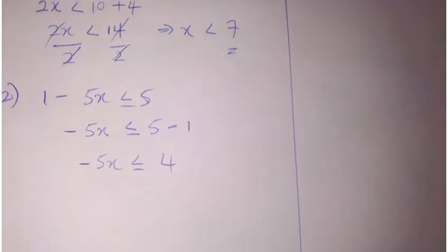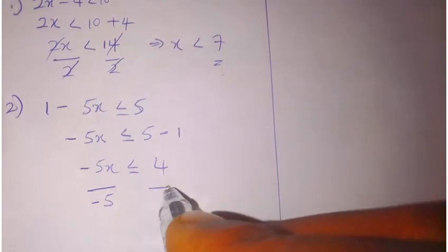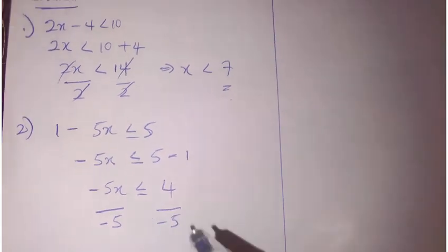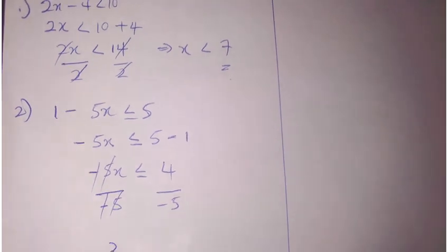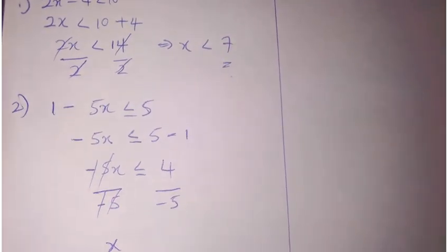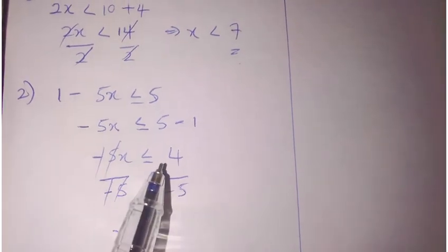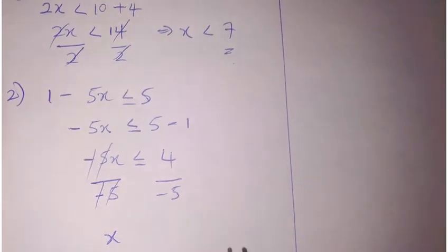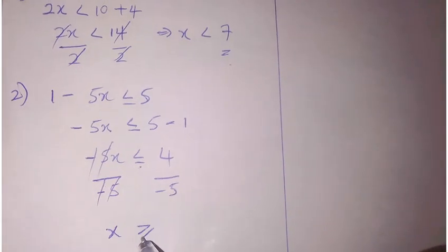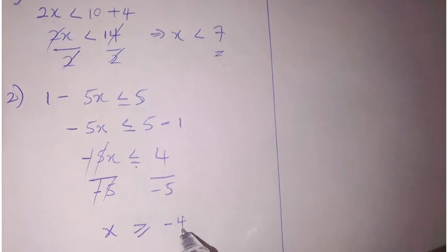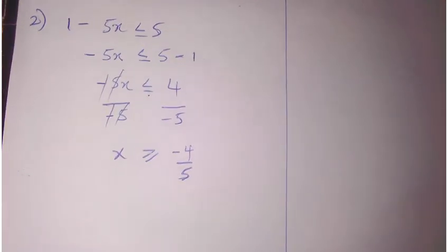To find the x, I divide by negative 5. Now, since I'm dividing by a negative number, my inequality sign changes direction. From less than or equals to, it changes to greater than or equals to. So x is greater than or equals to minus 4 over 5. And that's the answer.